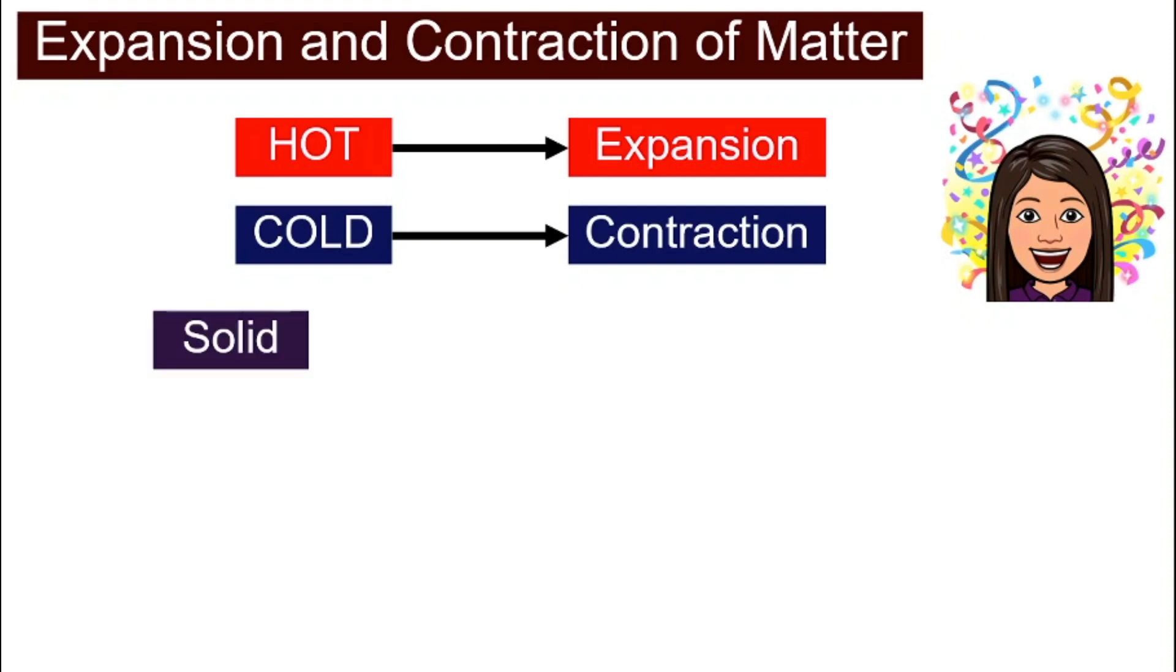Expansion and contraction can happen in all three states of matter: solid, liquid, and gas. Let's take a look at solid first. We will look at examples for all three different states of matter.